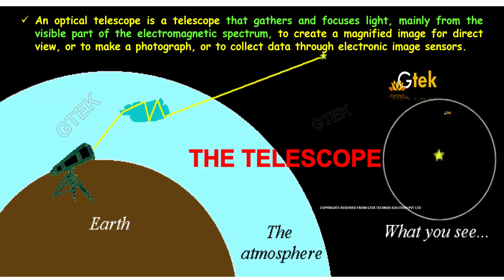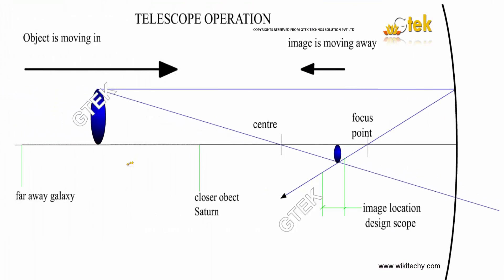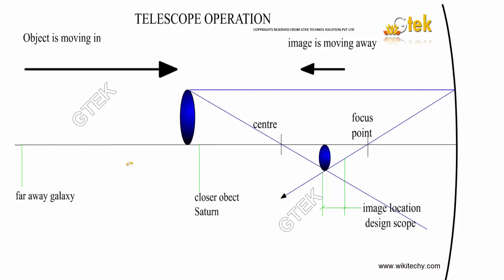Here is the real-time example and the operation of a telescope. You can see here the object is moving in, so this one is the object which is moving towards this side.